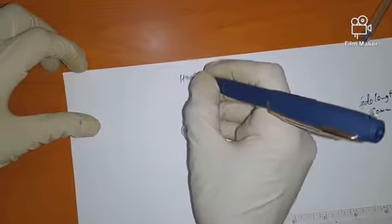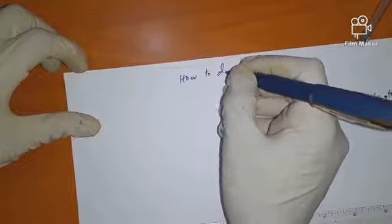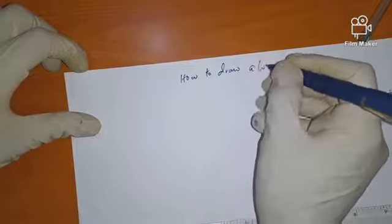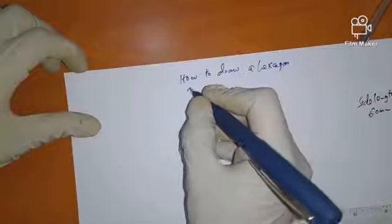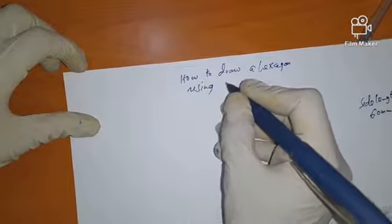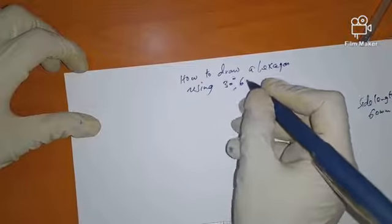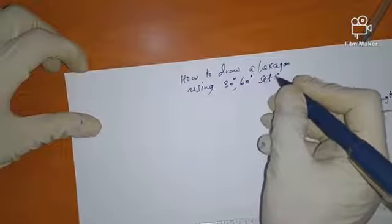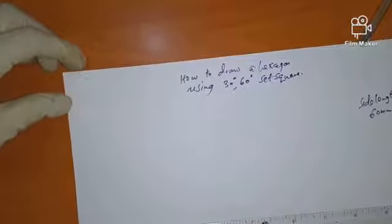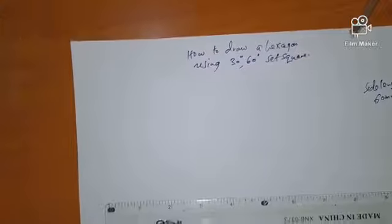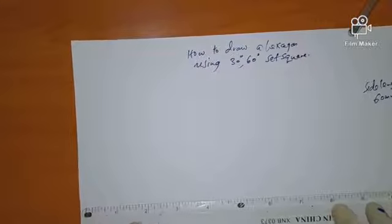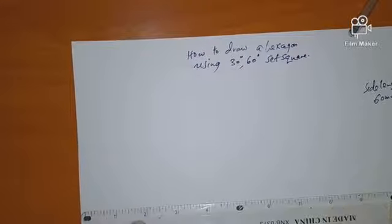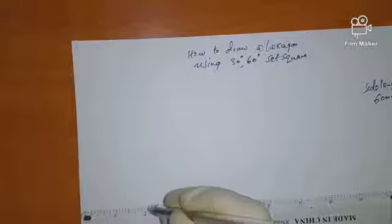We are going to draw a hexagon using a 30 degree 60 degree set square. The first step in this case is to draw our baseline, and this baseline is on which we are going to have our side length of 60 millimeter.